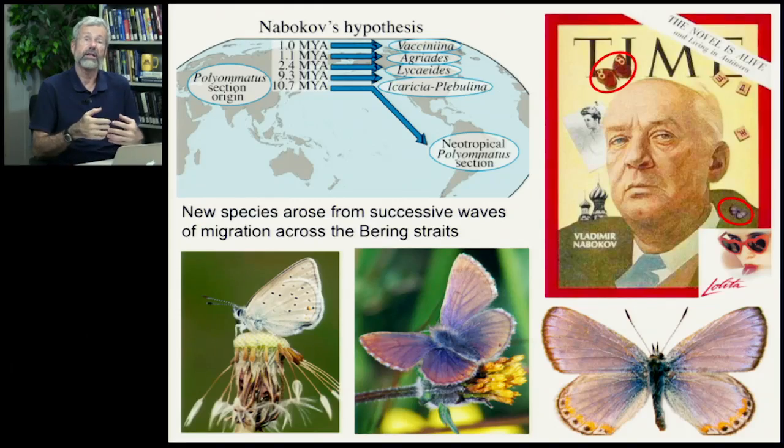The process of speciation through isolation has been understood for quite a long time, and it's worth taking a historical view. The famous novelist Vladimir Nabokov, who wrote Lolita among other excellent books, was also an amateur evolutionary biologist who specialized in butterflies. He had a very interesting idea about how geographical separation, like island speciation, could lead to the formation of new species.